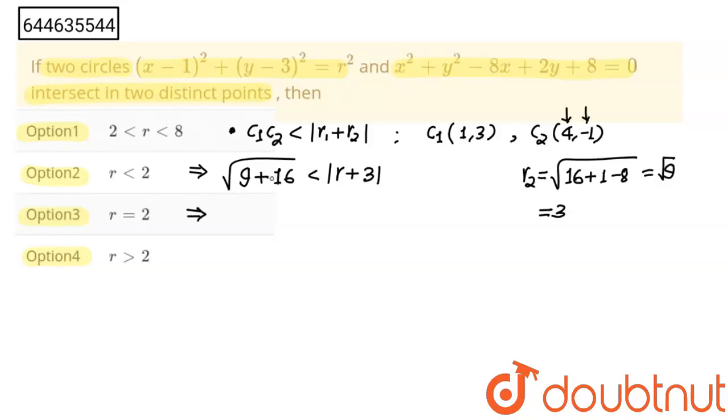Less than r plus 3. Now we have to solve this inequality. And this inequality is mod r plus 3 is greater than 5. So when there is greater than sign towards mod, this breaks into two parts.